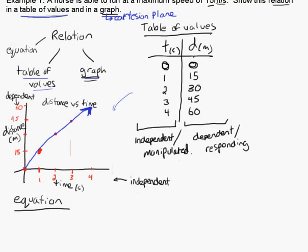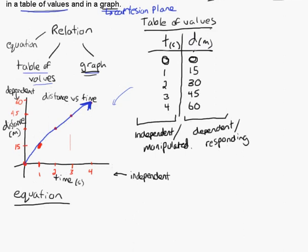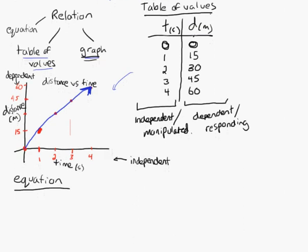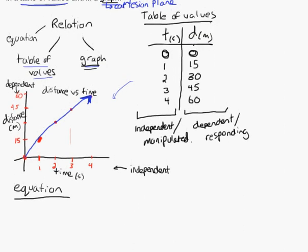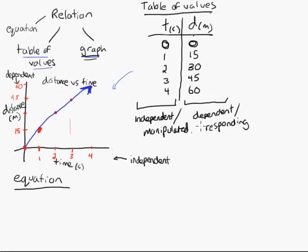With a linear relation, you always want to try to derive an equation from the table of values. What we know is you always want to have the dependent variable equaling something. Here we know that we want the dependent variable, which is distance, is equal to something. If you wanted to figure out the relationship in words, you could say, well,